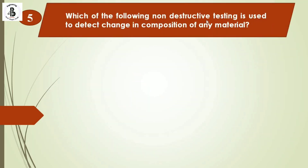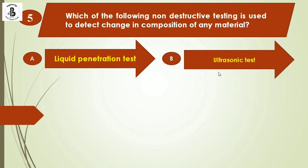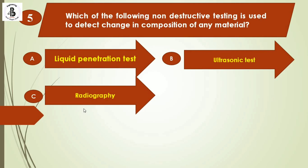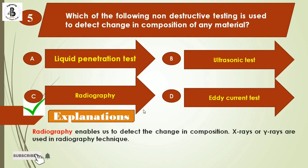Next question: Which of the following non-destructive tests is used to detect changes in composition of any material? Option A: liquid penetration test. Option B: ultrasonic test. Option C: radiography. Option D: eddy current test. Radiography enables us to detect changes in composition. This test uses X-rays or gamma rays. With the help of radiography testing, changes in the composition of any material can be detected. The right answer is option C, radiography.